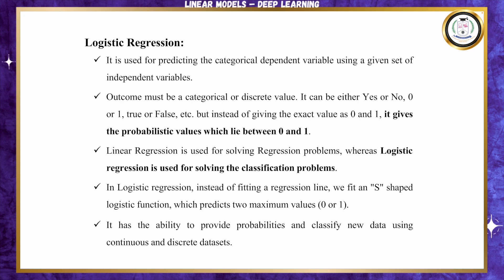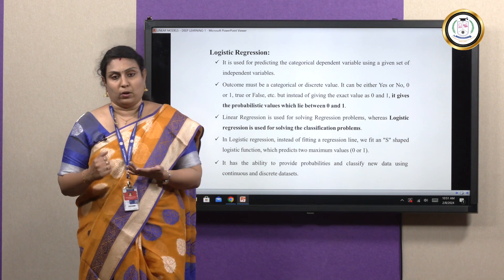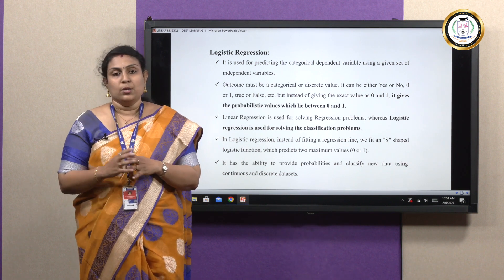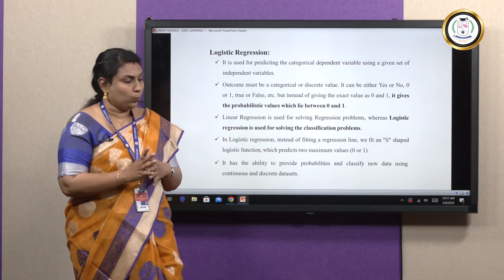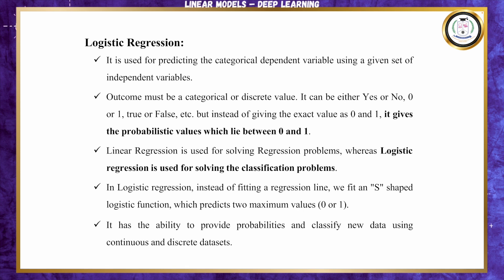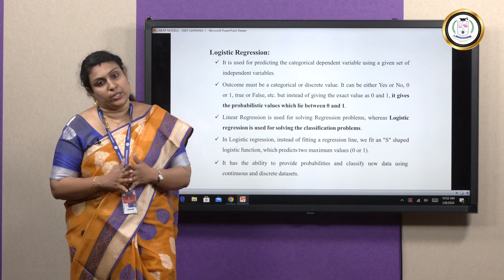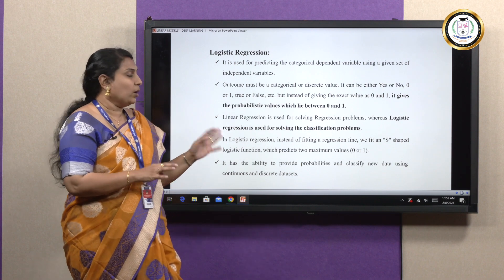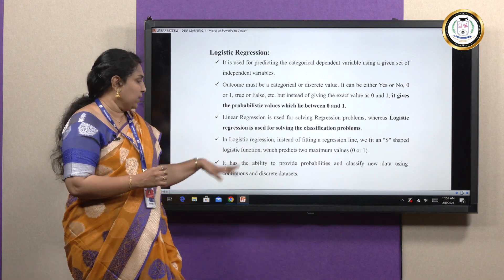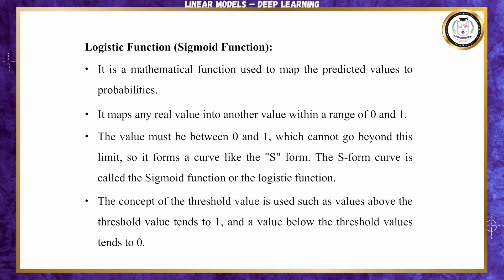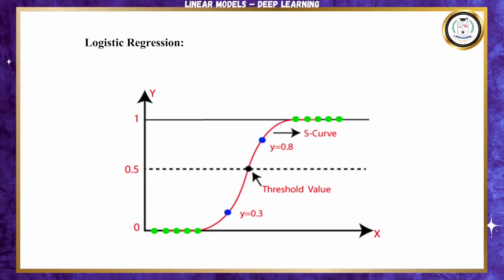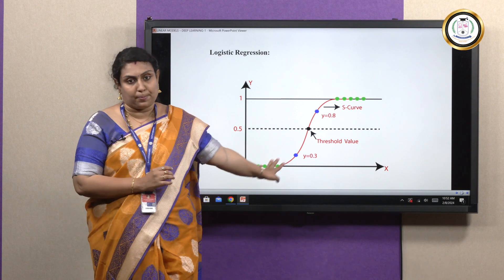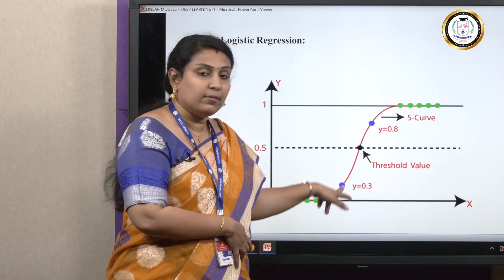The output of logistic regression will be either 0 or 1 — true or false, or one category like male or female. It is a probabilistic value between 0 and 1. Linear regression is used for regression problems, whereas logistic regression is used for classification problems. It is represented as an S-shaped curve. It is a mathematical function that predicts values ranging from 0 to 1 — this S-shaped curve is called a sigmoid curve, also known as the sigmoid activation function.